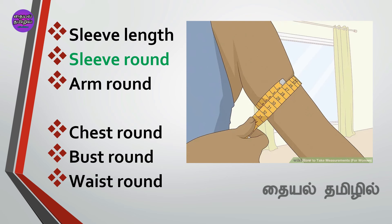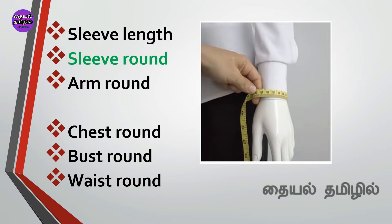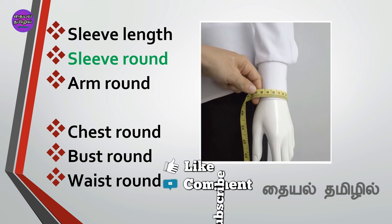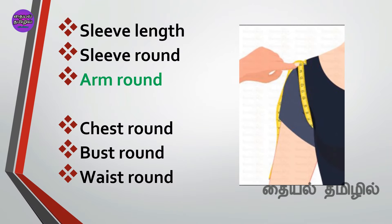You can use the sleeve round. Please use the full sleeve to the sleeve round — then the fitting will be correct. This is the full sleeve length measurement. If you use the length to the bottom, you can use the length measurement. Full sleeve, wrist round, arm round — these are the body measurements.